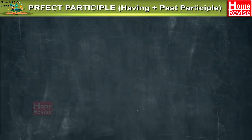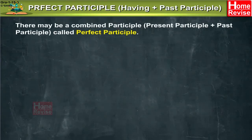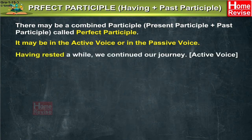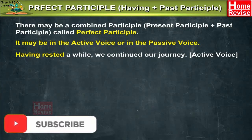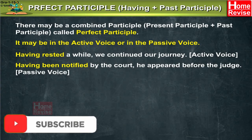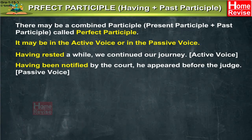Perfect participle is formed using 'having' plus the past participle. There may be a combined participle — present participle plus past participle — called the perfect participle. It may be in the active or passive voice. Active voice example: 'Having rested a while, we continued our journey.' Passive voice example: 'Having been notified by the court, he appeared before the judge.'